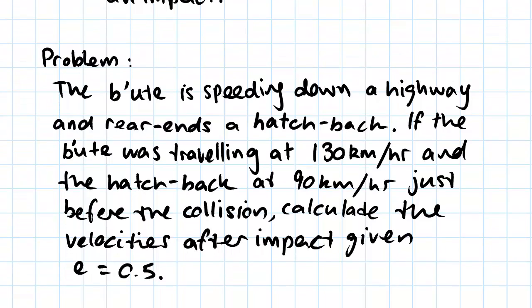If the ute was traveling at 130 kilometers per hour and the hatchback at 90 kilometers per hour just before the collision, we're asked to calculate the velocities after impact given e = 0.5, e being the coefficient of restitution which we discussed in the previous video.